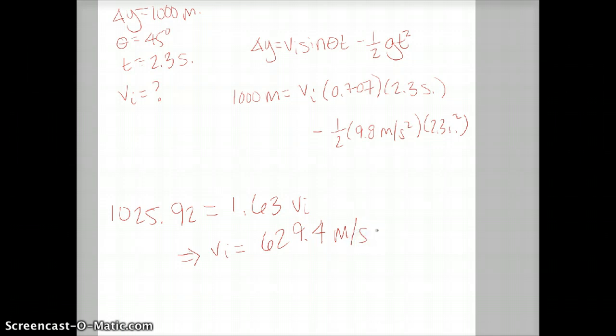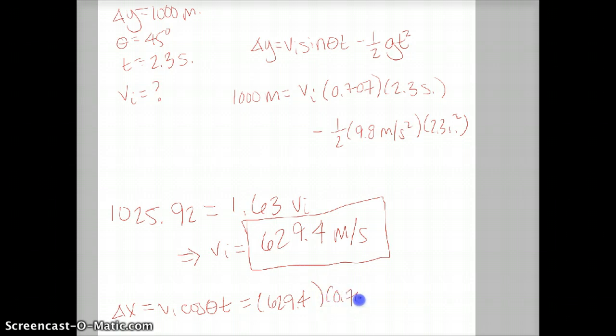In other words, the average airspeed velocity of that unladen swallow was over 600 meters per second. Not a very physical number, but one that we obtained through a good projectile motion problem workery. In any case, if we want to see how far away it went now, delta x would be vi cosine theta times t. We have all these values. We just plug it in. 629.4 times 0.707 times 2.3. That would be 1,023.47 meters.